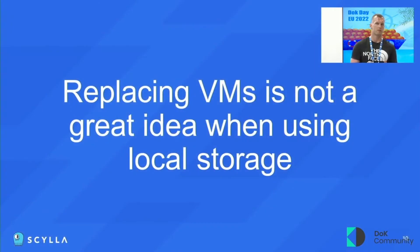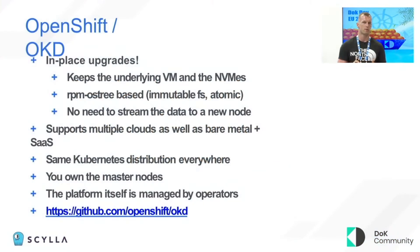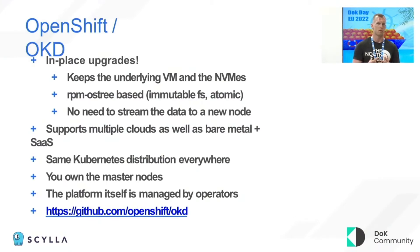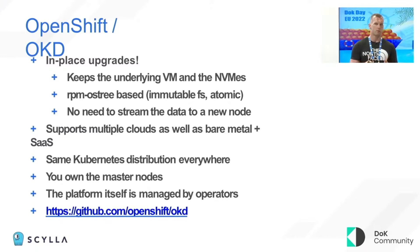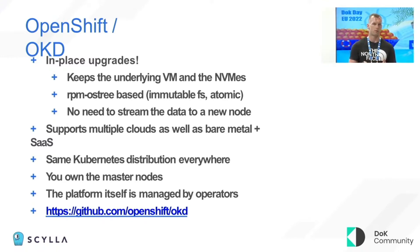So maybe replacing VMs is not a great idea when you are using local storage. Is there a way out of this? Yes — there are other distributions like OpenShift or OKD, which is the upstream version, that do in-place upgrades, which means you still get the same VM and the same local disk you had before. It uses an RPM-OSTree file system that's immutable and does atomic switches to a new version, so you don't have to stream your data to a new node at all. You also get the same Kubernetes distribution everywhere and it's not that hard to manage because the platform is managed by operators.